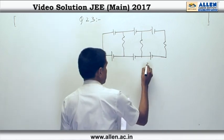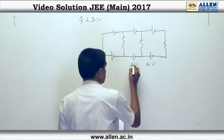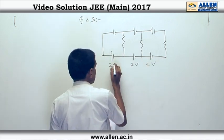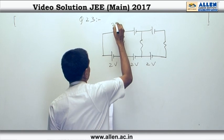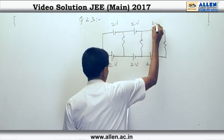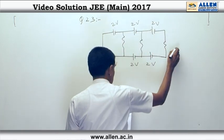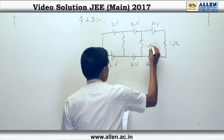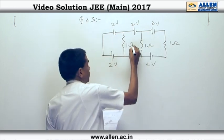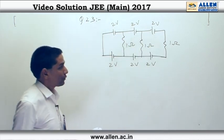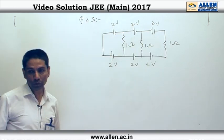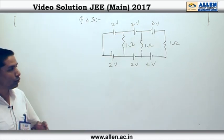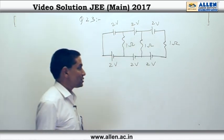This is a battery of 2 volt, this is 2 volt, this is also 2 volt, 2 volt, 2 volt, 2 volt. There is a 1 ohm resistance, 1 ohm resistance, and 1 ohm resistance. Now I am going to use nodal analysis.